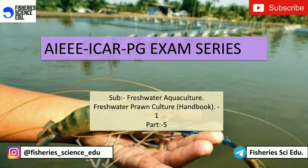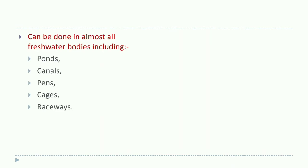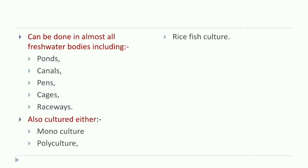Freshwater prawn culture can be done in almost all freshwater bodies including ponds, canals, pen cages, and raceways. It can also be cultured either as monoculture, polyculture, or rice-fish culture.